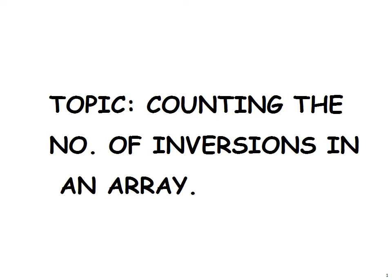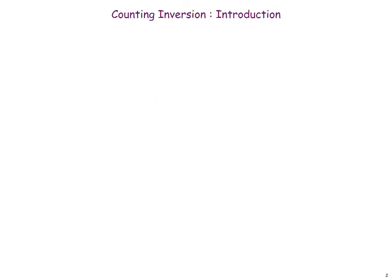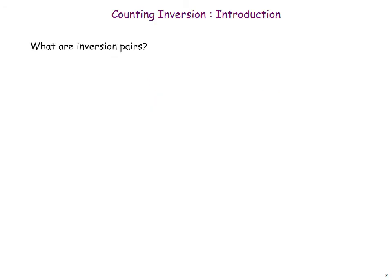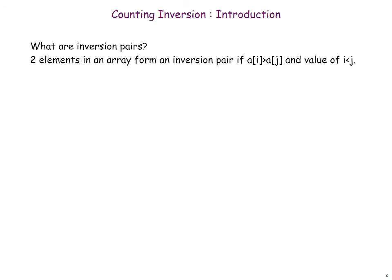In this tutorial, we will be studying how to count the number of inversions in an array. First of all, what are inversion pairs? Two elements in an array form an inversion pair if a[i] is greater than a[j] and the value of i is smaller than j.